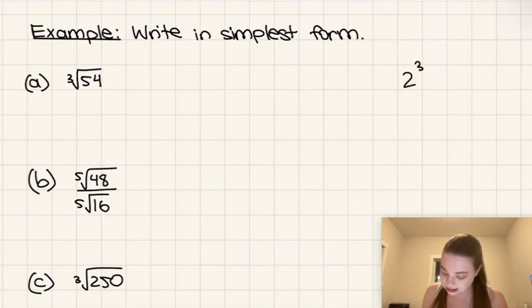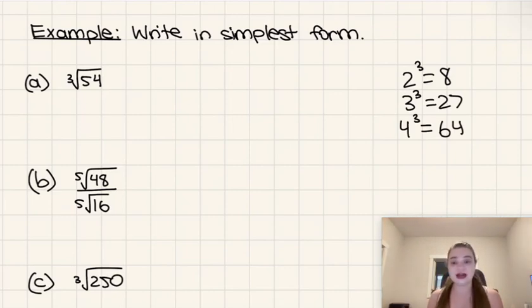Well, 2 cubed is 8, 3 cubed is 27, and then 4 cubed is 64, which is already greater than 54. So we just have to check in this case whether 8 or 27 is a factor of 54.